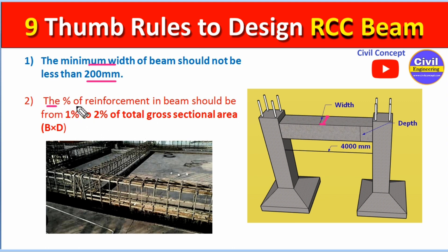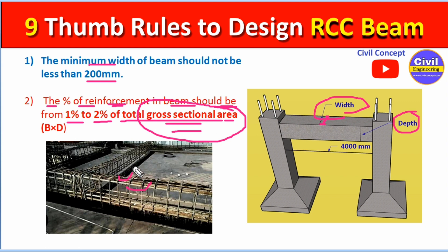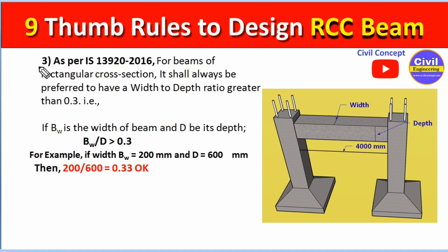Our second point is: the percentage of reinforcement in the beam should be from 1% to 2% of the total gross sectional area. The gross sectional area is simply the width multiplied by the depth of the beam. The percentage of rebar should not be less than 1% and not greater than 2%.